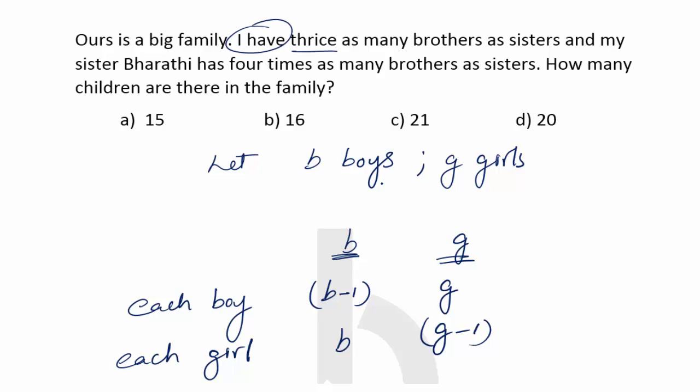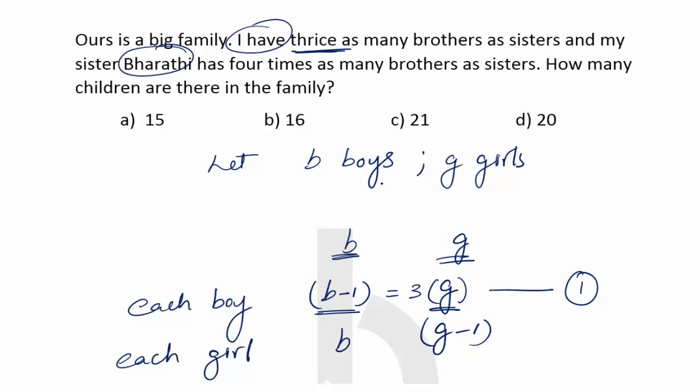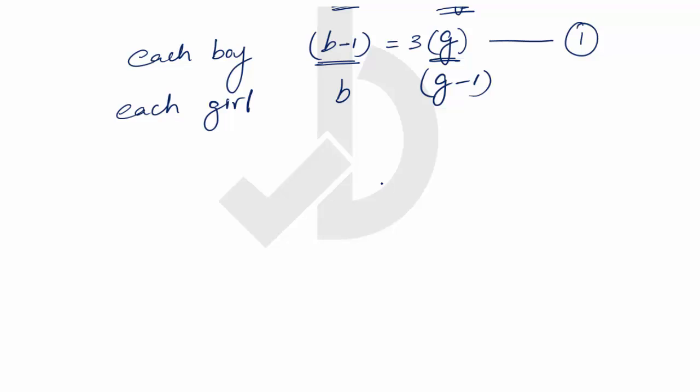It is said that I have thrice as many brothers as sisters. So for each boy, brothers are three times the sisters, giving us equation one: B-1 equals 3G. Whereas sister Bharti has four times as many brothers as sisters, so equation two: B equals 4 times G-1.